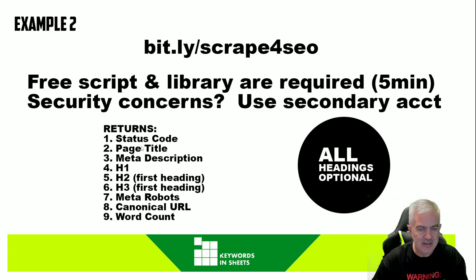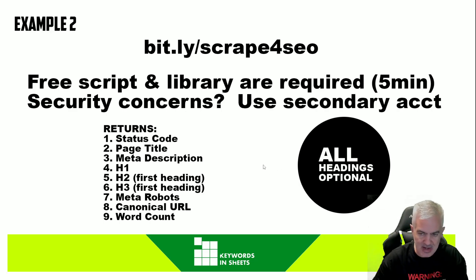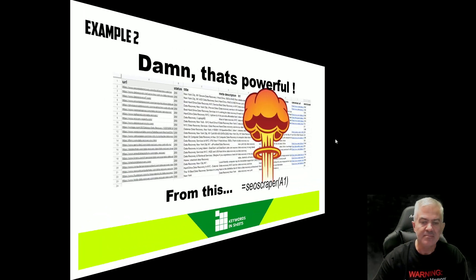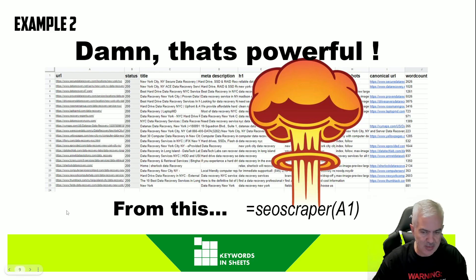Again, it returns the status code, page title, meta description, H1, H2, H3, meta robots, canonical, and word count. All headings are optional — if you want all the H1s or H2s on the page, you can modify the formula to output that. You get this entire thing from the list of URLs, and I output these from MozBar — this was the only formula that had to be added. SEO scraper. Pretty neat.